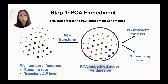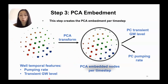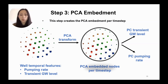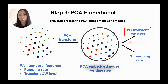Step three is preparing the time series data for neural network training. We take the pumping rates and transient groundwater levels for all wells and apply a PCA — principal component analysis — embedment, transforming the data into PCA space per time step, not over the whole series. We then split the two components. We end up using only one principal component for neural network training, which is the transient groundwater level.